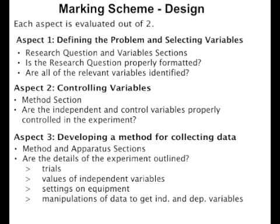The planning section, like each of the three sections in the internal assessment, is evaluated out of six. Each aspect is either complete (2), partial (1), or not complete (0). In order to get complete, the criteria has to be done almost perfectly — most students get a lot of partials. The first aspect of design relates to laying out the experiment, identifying the variables, and formulating a good research question. Aspects 2 and 3 relate to the procedure: aspect 2 focuses on making sure all variables are properly controlled, and aspect 3 focuses on outlining an experiment that is workable and will produce sufficient useful data. It is well worth taking the time to learn how to write a good procedure and to review it carefully after writing to make sure you haven't missed anything.